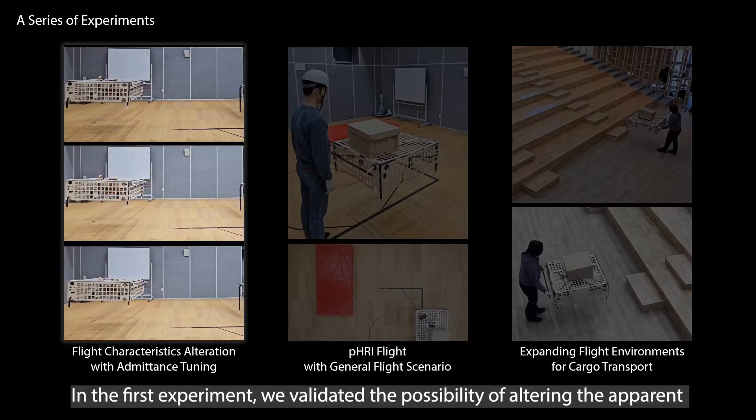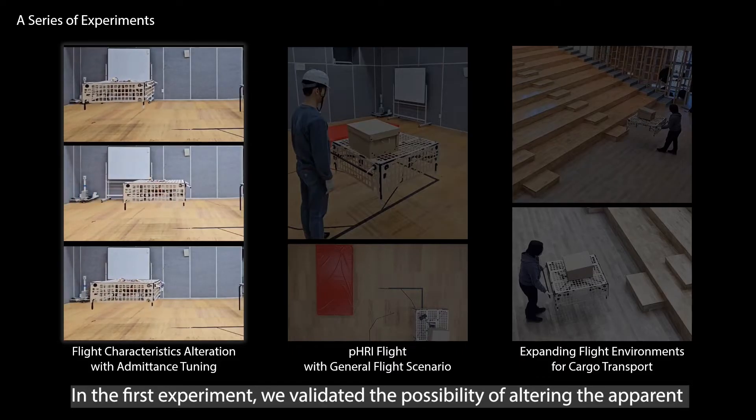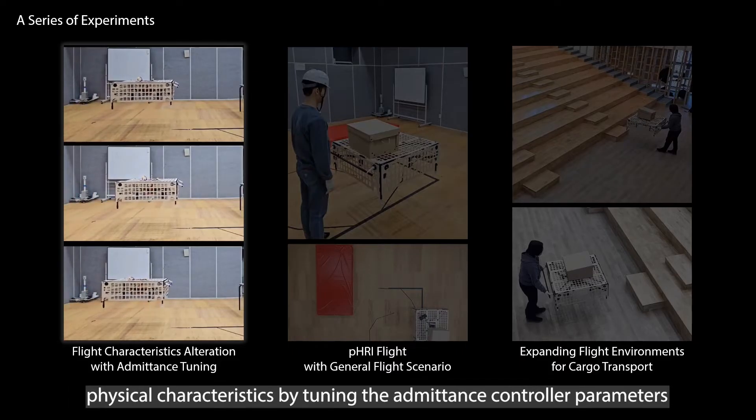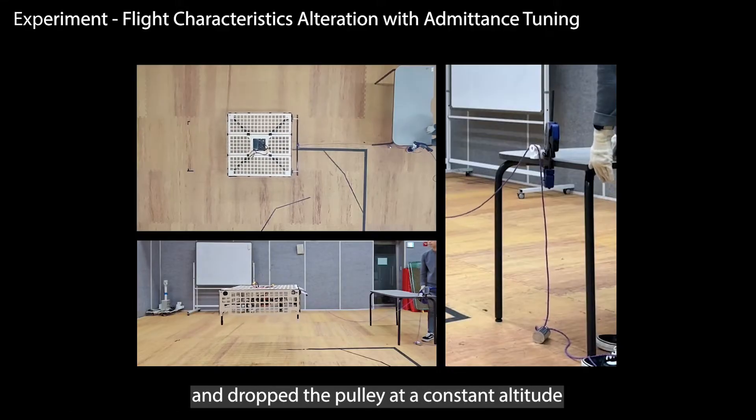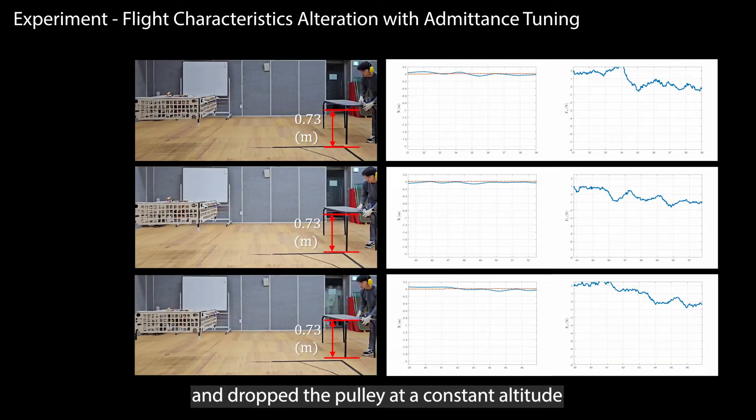In the first experiment, we validated the possibility of altering the apparent physical characteristics by tuning the admittance controller parameters. For the experimental setting, we connected a tether to a weight with a pulley and dropped the pulley at a constant altitude.